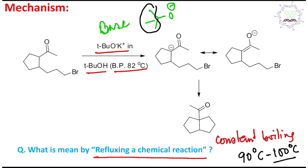Now the question is: what are the acidic sites present in this molecule? There is HA and HB — two acidic protons are possible, because the alpha proton of a carbonyl carbon is significantly acidic, as the resulting carbanion is resonance-stabilized forming an enolate. HA is actually more acidic and also less bulky.